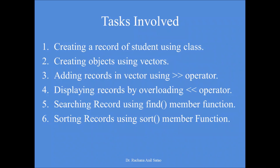The steps we need to follow are: first, creating a record of a student using a class — we create a class Student with variables such as roll number, name, marks, telephone number, date of birth, etc. Second, creating objects using vectors as specified in the syllabus. Third, adding records in the vector by overloading the stream extraction operator. Fourth, displaying records by overloading the stream insertion operator. Fifth, searching records using the find member function. Sixth, sorting records using the sort member function.